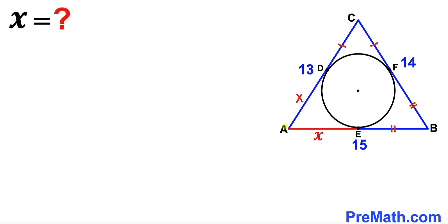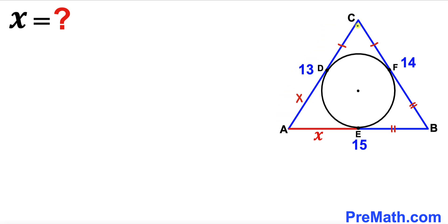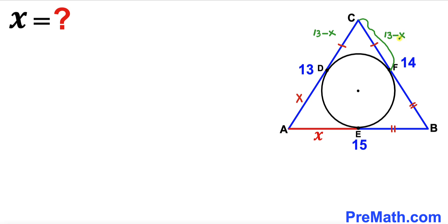Since tangent AD is X, and the whole side length AC is 13, the tangent segment CD is going to be 13 minus X. Since CD and CF are congruent, tangent CF is also 13 minus X.